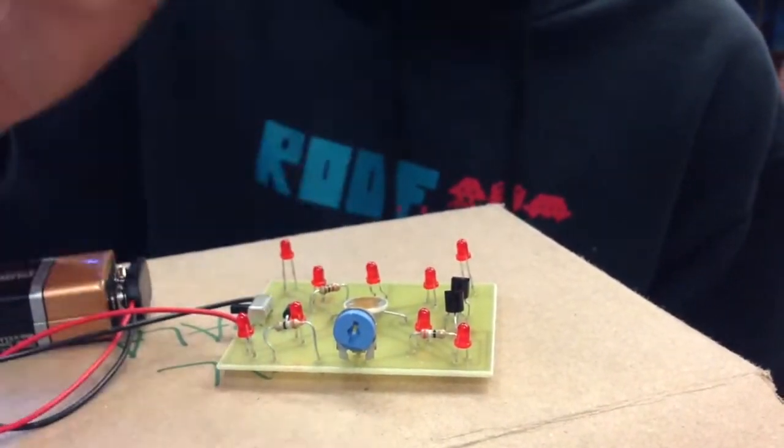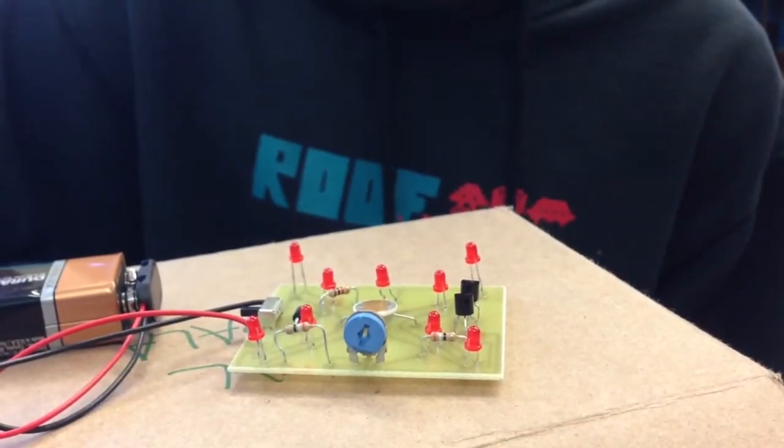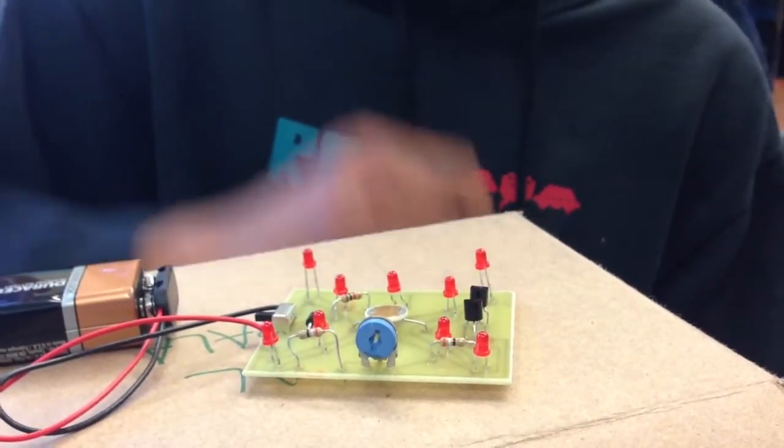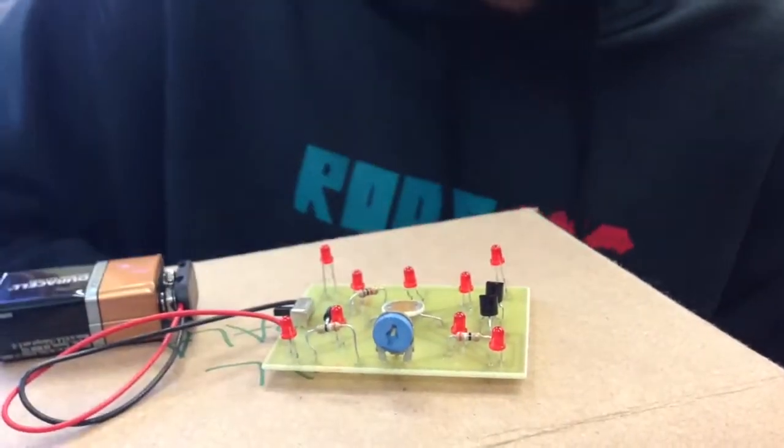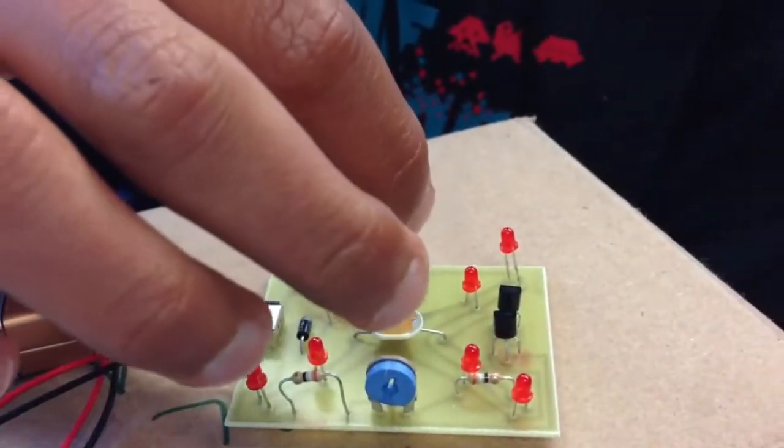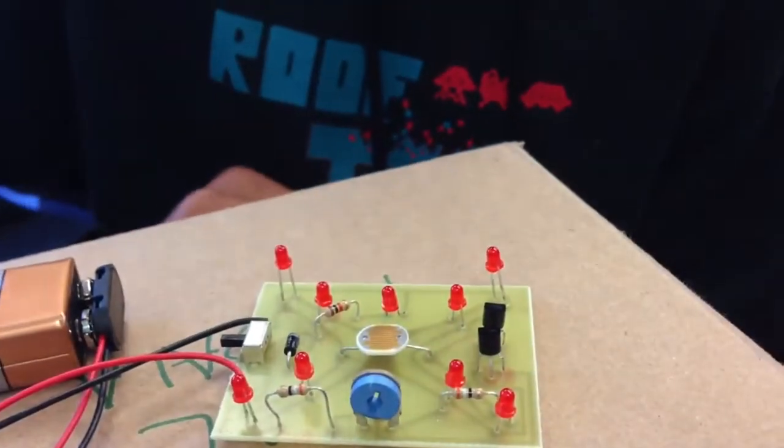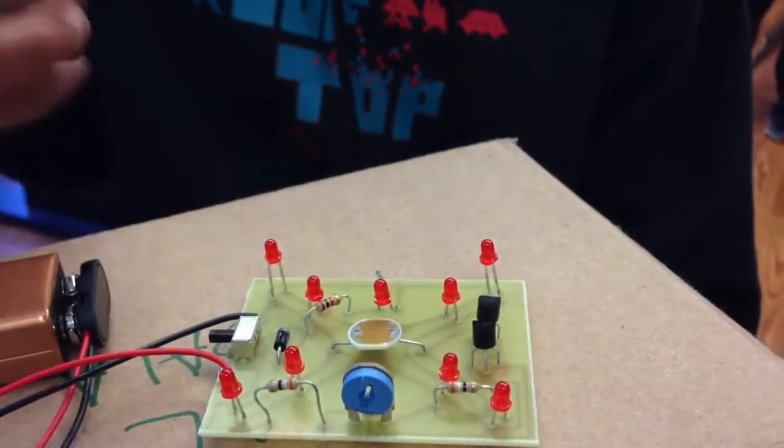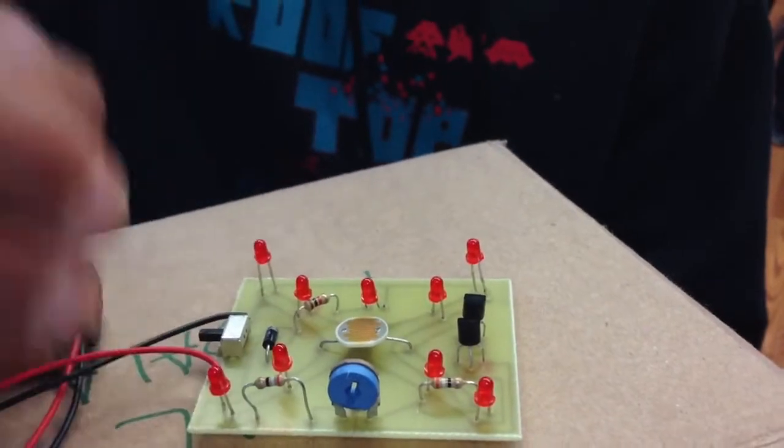This is a vertical trim resistor which keeps the current constant and unvarying. This is a CDS cell. It's a photoresistor, and so when it does receive light, it does not resist the electric current. The LEDs can light up, but when there is no light, it resists the current and the LEDs are not allowed to light up.